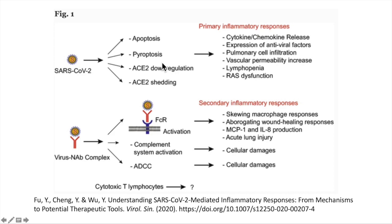SARS-CoV-2 infection also causes increased secretion of the inflammatory molecules interleukin-1b, interferon-gamma, IP10, MCP-1, interleukin-4, and interleukin-10. Most patients can tolerate primary inflammatory responses at this stage of infection with a positive outcome of viral load reduction or even viral clearance, followed by a receding of inflammation.